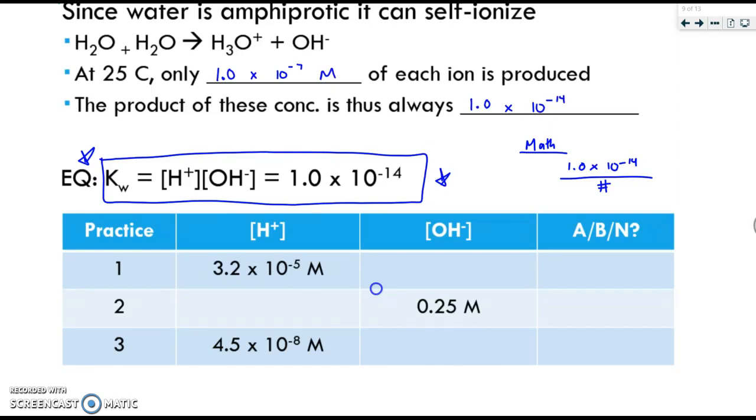So for this first example here, we have our 1.0 times 10 to the negative 14th. And I'm going to divide that by the given number of 3.2 times 10 to the negative 5th. When I do that in my calculator, I should get something like this, 3.1 times 10 to the negative 10th.